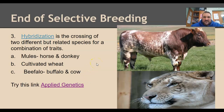Hybridization is the crossing of two different species. Inbreeding involves two very, very similar, very closely related organisms. Hybridization, on the other hand, involves organisms so far apart that they are actually two different species.